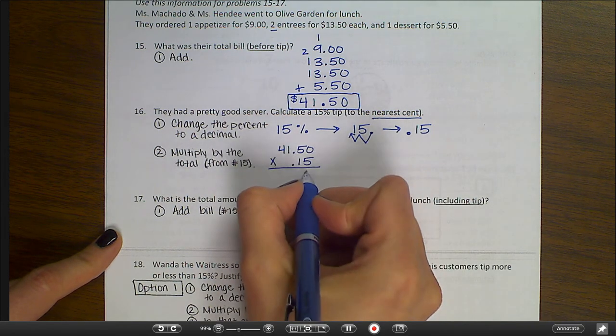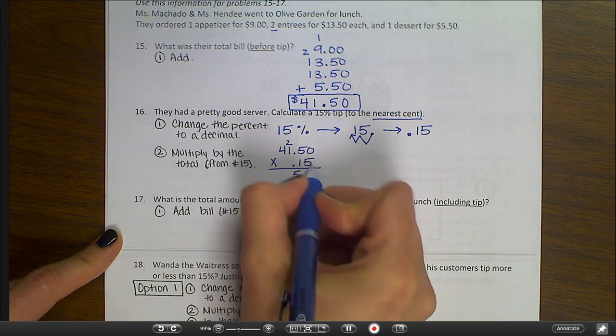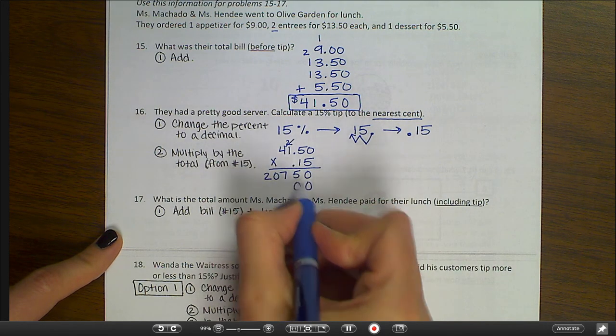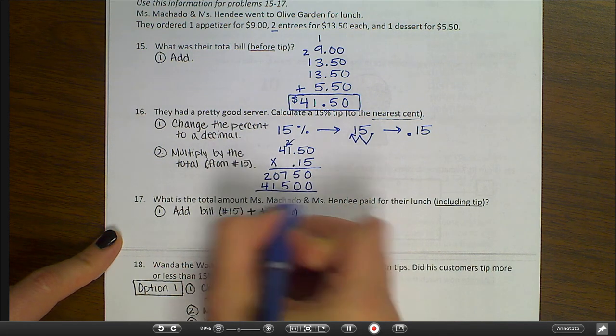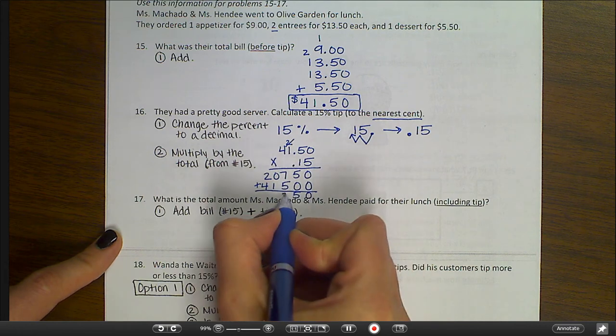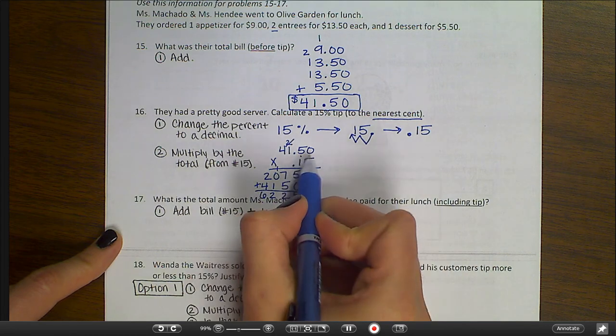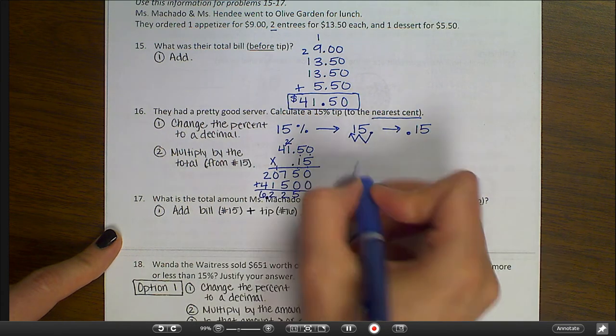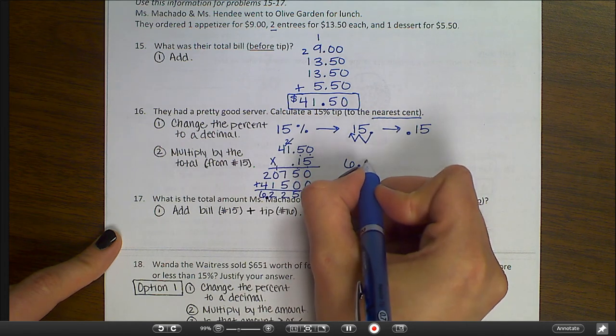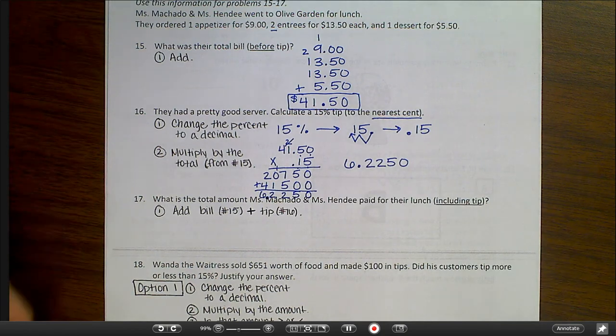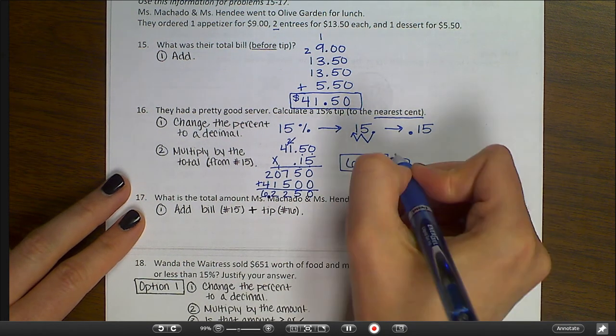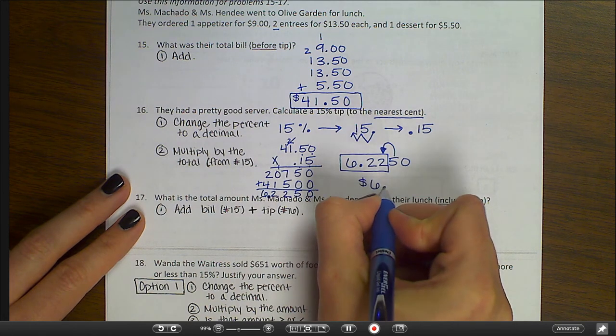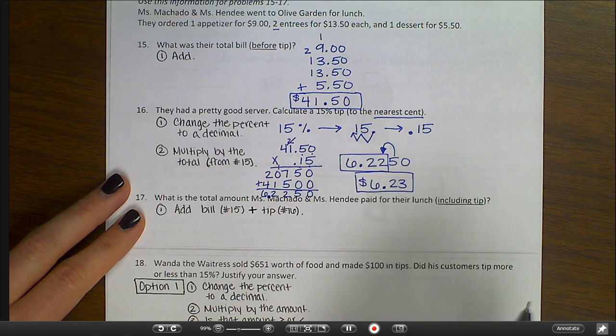Follow along as I do this multiplication on paper. Get rid of what I carried. I need a placeholder zero. We're going to try to squeeze this in here. And I have one, two, three, four digits that need to go behind the decimal. One, two, three, four. So I end up with 6.2250. Well, I can't keep all of that for money. I need to only have this much. So let's look at the five. What does the five tell me to do with the two? Well, it tells me to round up. So I'm going to end up with $6.23 as the amount for the tip.